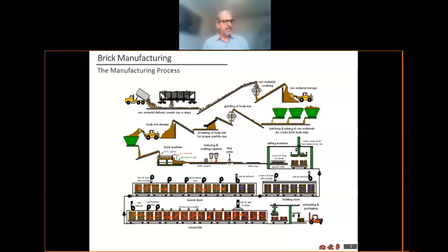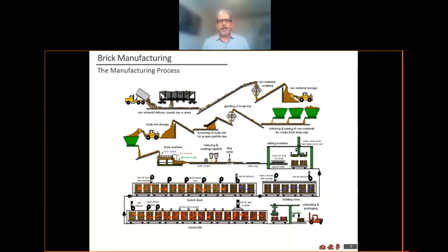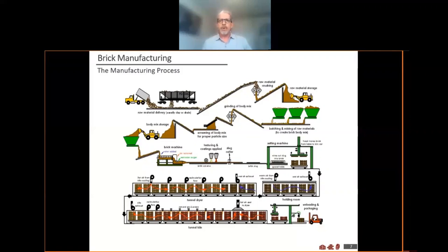At the extruder stage, the length and the bed depth of the brick are formed, as well as the core holes — all of that happens at one time. The brick progresses down the line; any texture or material that needs to be added to the face will be added at that time. Then it's cut into slugs, and the slugs are pushed through cutting wires. Depending on how the cutting wires are spaced, that will determine the height of the brick.